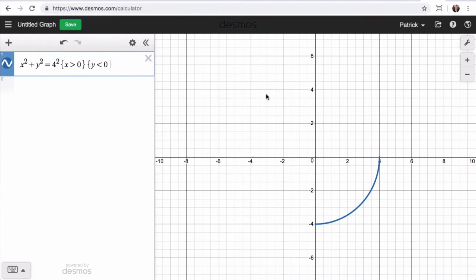If I wanted a quarter circle, let's say up here, then I know that x is less than 0 and y is greater than 0. So let me put that in. So x is less than 0, but I also want that y is greater than 0. And then we have that quarter circle there.